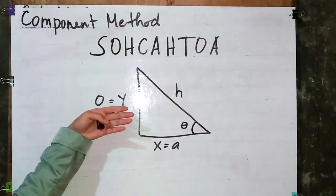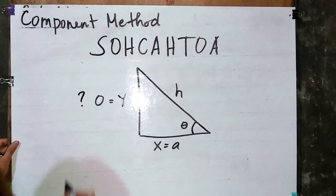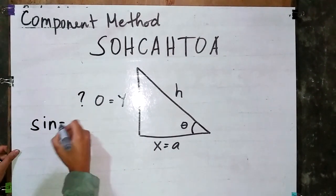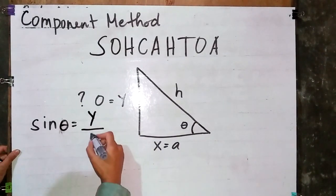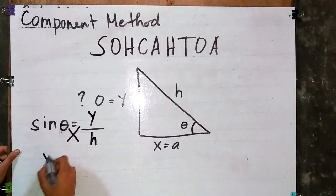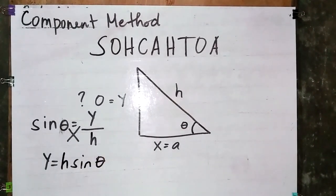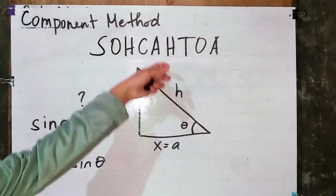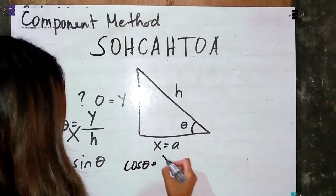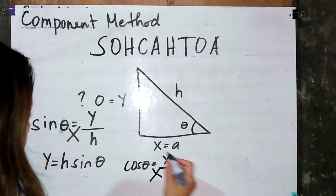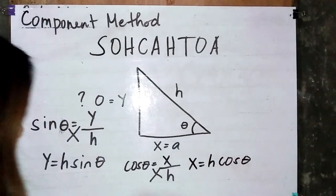To solve for the y component, which is the opposite side, we use sine: sine theta equals y over hypotenuse. Cross-multiplying, y is equivalent to hypotenuse times sine theta. For the adjacent side, we use cosine: cosine theta equals x over hypotenuse. Cross-multiplying, x is equivalent to hypotenuse times cosine theta.